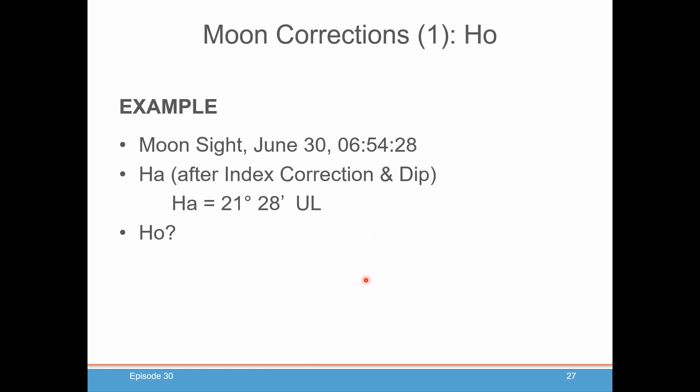Let's actually go through one of these so you can see how easy it is to do. Let's make believe we're doing a moon sight on June 30th at 654.28 UTC. And HA, after index correction and dip, let's assume it's 21 degrees, 28 minutes. And you took a sight on the upper limb of the moon. It's just like the sun, you could do upper or lower limb since the moon is so large. From this information, what's our HO? How do we do it?